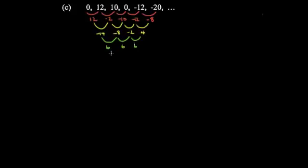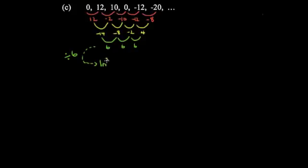Interestingly, it all becomes constant on the third row. Unlike quadratic sequences where we divided by 2, if it's constant on the third row we divide by 6. So the coefficient of n cubed is 6 divided by 6, which is 1 — so it's 1·n cubed.